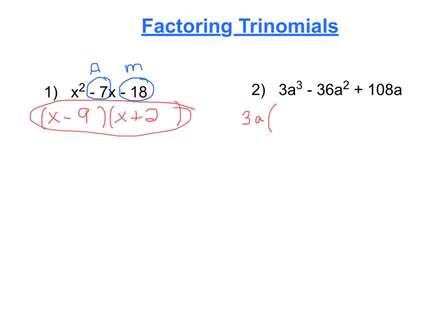In parentheses, we're going to write what we're left with when we pull out the GCF. So remember, when you pull out a GCF, you're just taking each term and dividing it by the greatest common factor. So that'll leave us with an a squared, and then minus 36 divided by 3 is 12, a squared divided by a is a, and then plus 108 a divided by 3a would be 36.